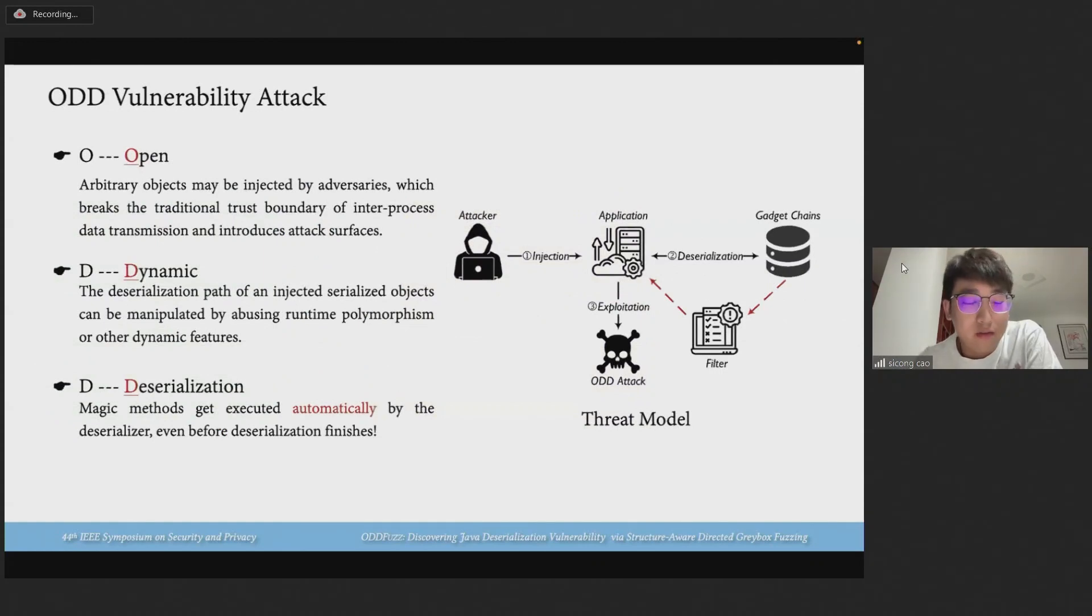However, despite its convenience, Java deserialization has several security threats in practice. First, it's open. Arbitrary objects may be injected by adversaries, which breaks the traditional trust boundary and introduces attack surfaces. Second, the process is also dynamic. The deserialization path can be manipulated by abusing runtime polymorphism. Third, due to the existence of magic methods, malicious objects get executed automatically even before deserialization finishes.